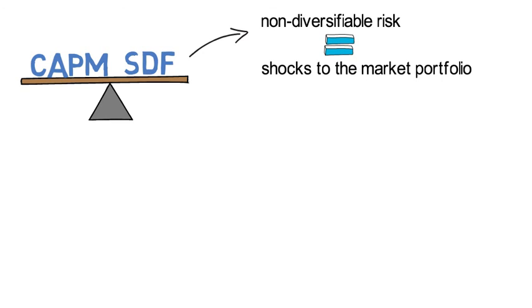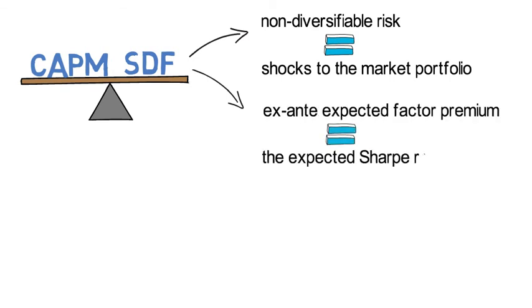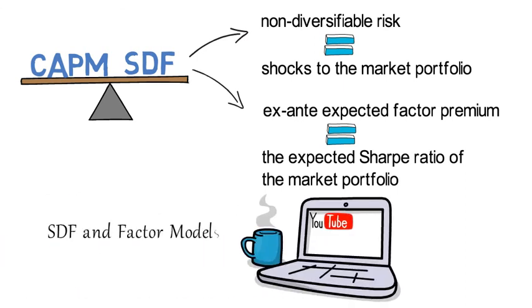And the respective CAPM expected factor premiums will be the expected Sharpe ratio of the market portfolio. Now if you want to see that relationship more explicitly, then I invite you to have a look at my video on the SDF and its relationship to factor models.